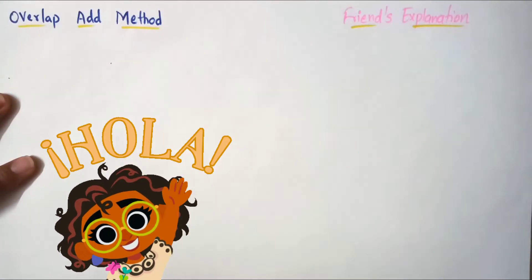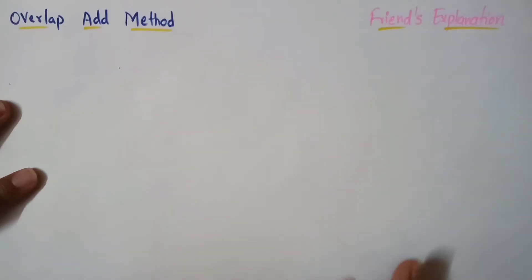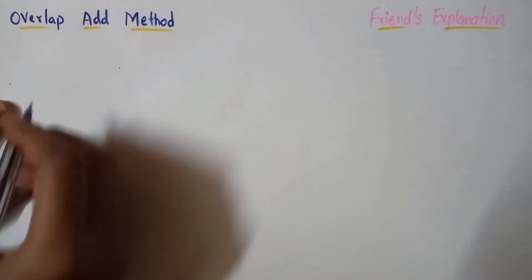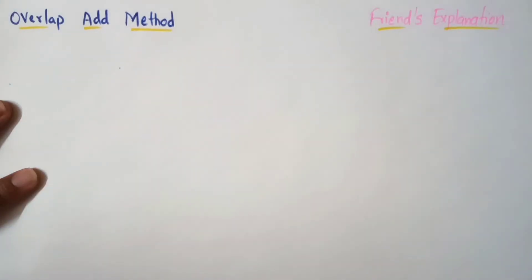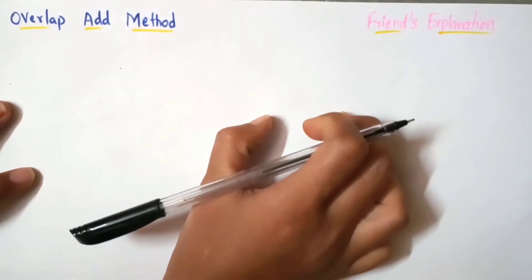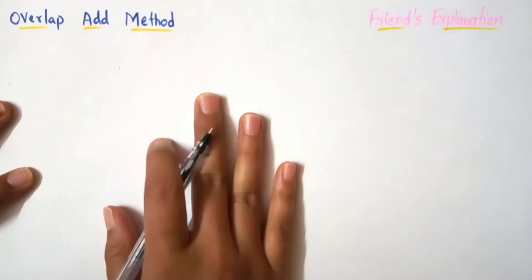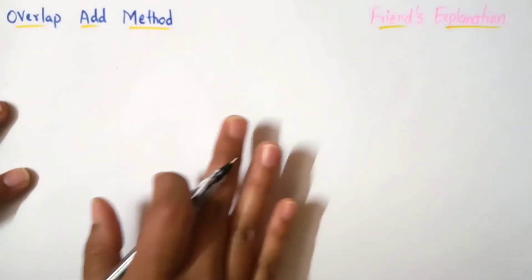Hello friends, welcome back to the channel, and if you are new, welcome to the channel. In this video we are going to discuss and learn the Overlap-Add method, which is from the subject called Digital Signal Processing. This overlap-add method is another method of doing convolution between a very long signal and a short impulse response signal, so let's take a question and solve it.